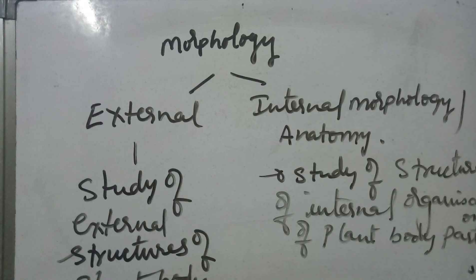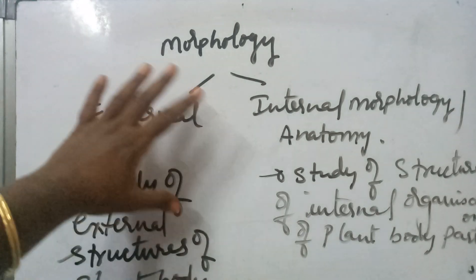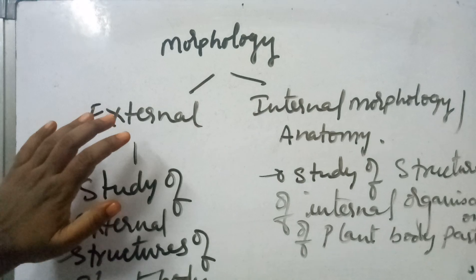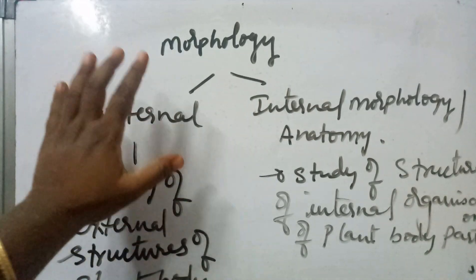In external morphology, we will first discuss the root system — what a root is, how it is formed, how many types of root systems exist, how a root develops, what functions it performs, and the different regions present in a root. After root, we will discuss the stem, its branches, leaves, flowers, fruits — all structures that form on a plant. All of these will be discussed under external morphology.